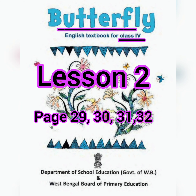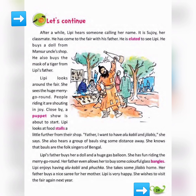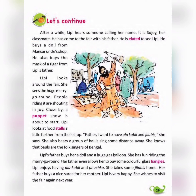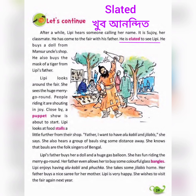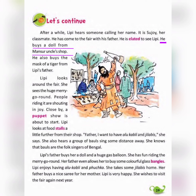Butterfly Class 4, Lesson 28, page number 29. After a while, Lippy hears someone calling her name. It is Shujoy, her classmate. He has come to the fair with his father. He is elated to see Lippy. He buys a doll from Mansoor Uncle's shop.